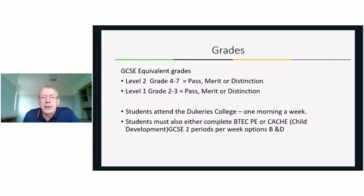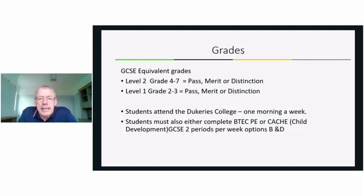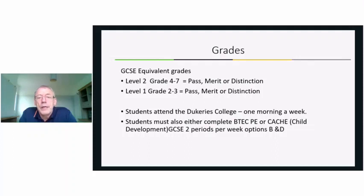GCSE equivalent grades: Level 2 in construction is equal to a grade 4 to 7. A pass is a 4, a distinction is a 7, and a merit, depending on where that merit sits, will be a 5 or a 6.